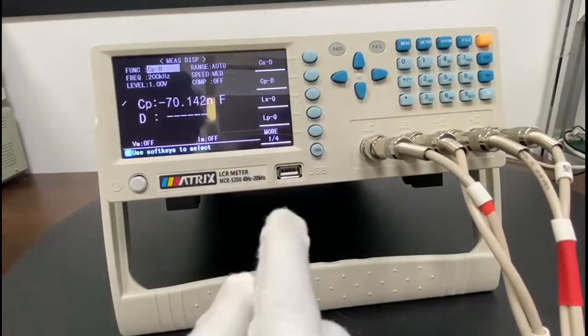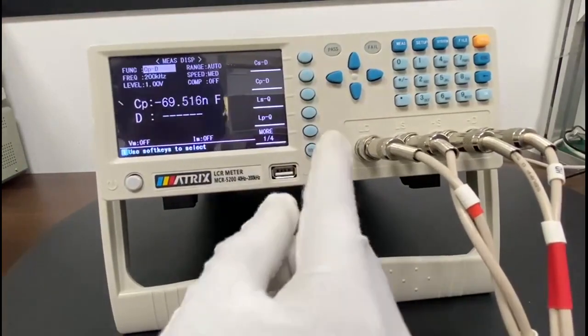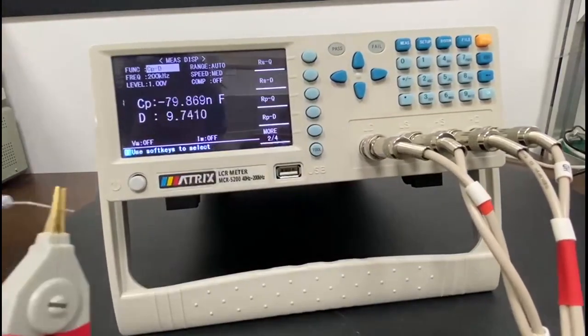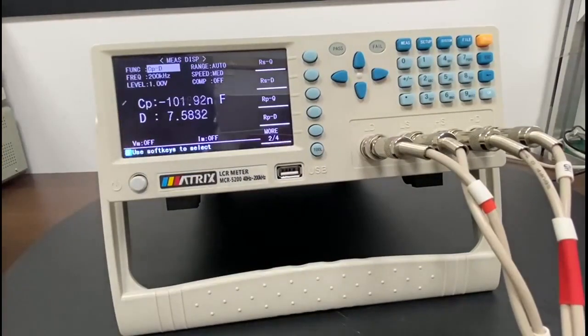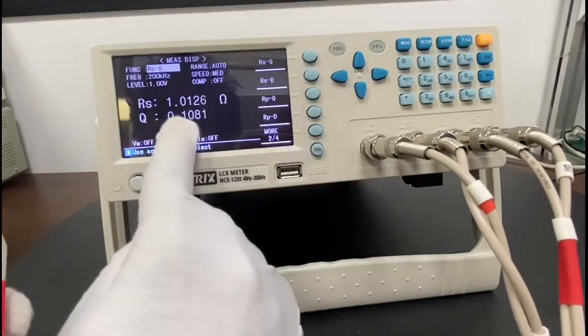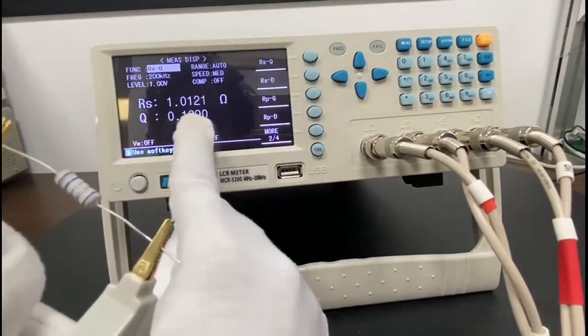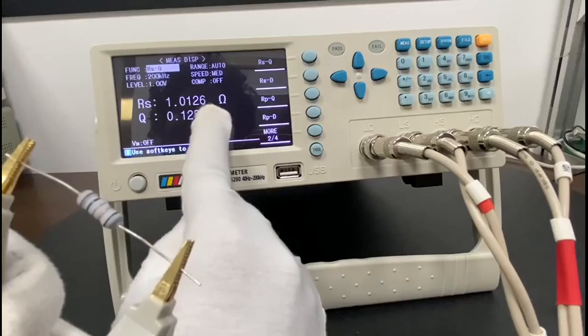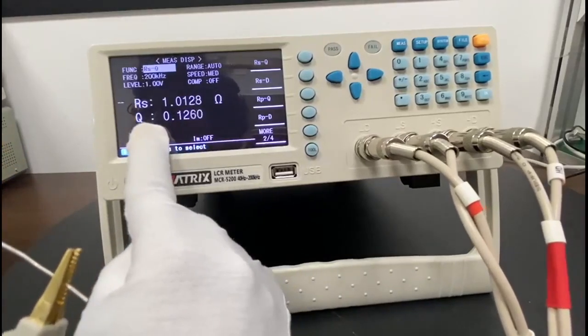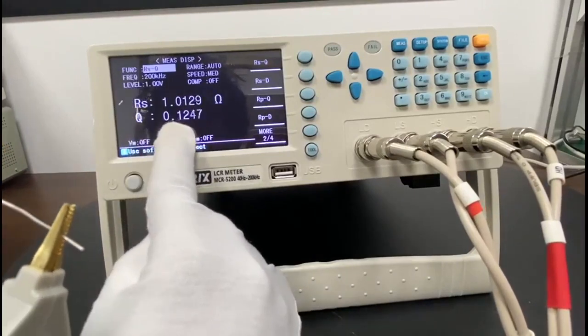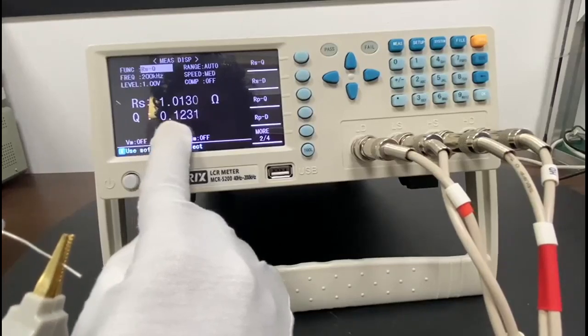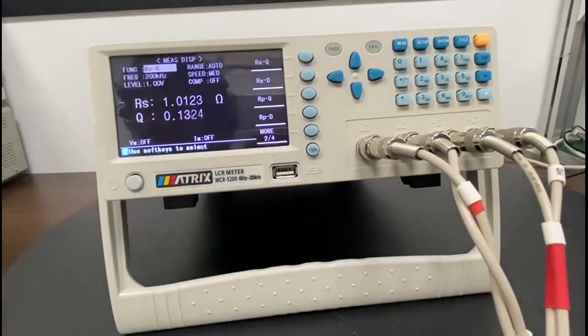So let's measure the resistance. So we have to go over here, resistance in series. So we can see the resistance in series is 1.01 ohm and the Q indicates the quality factor. The quality factor of this resistor is 0.12.